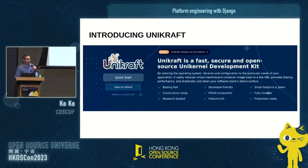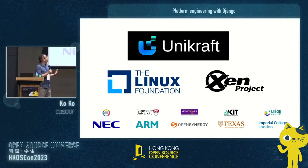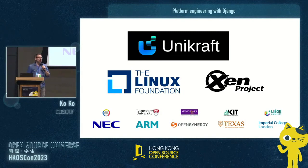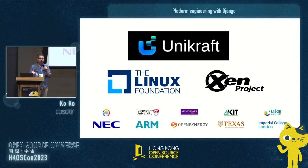Unikraft is an open-source project. We also have our startup, Unikraft.io, which is actually behind the open-source project. We are pretty new — the startup was founded in October in Heidelberg, Germany, so we are still pretty small. We are targeting both cloud providers and also companies that use cloud, so that you can reduce your cost in either case.